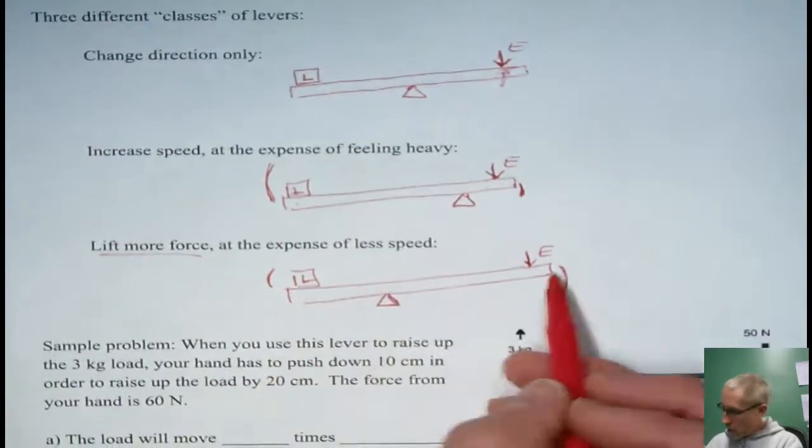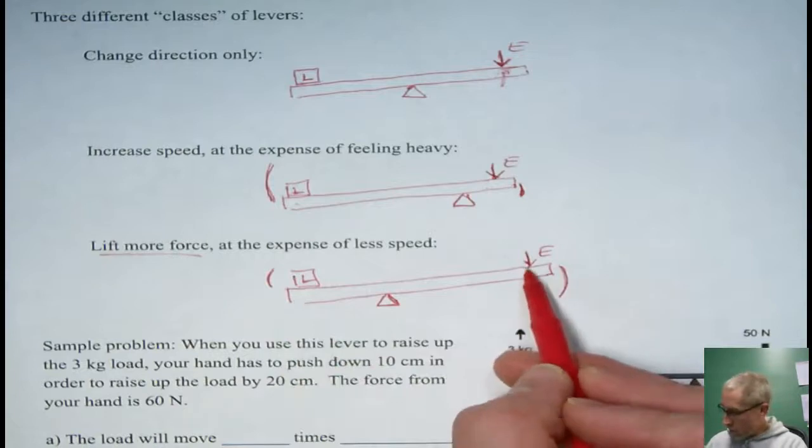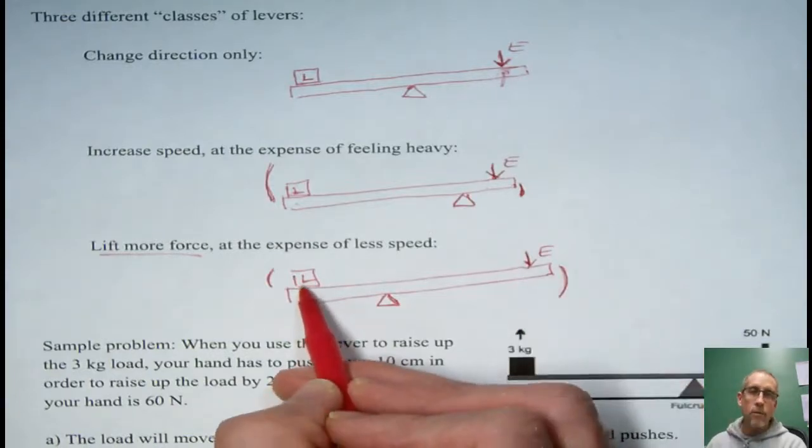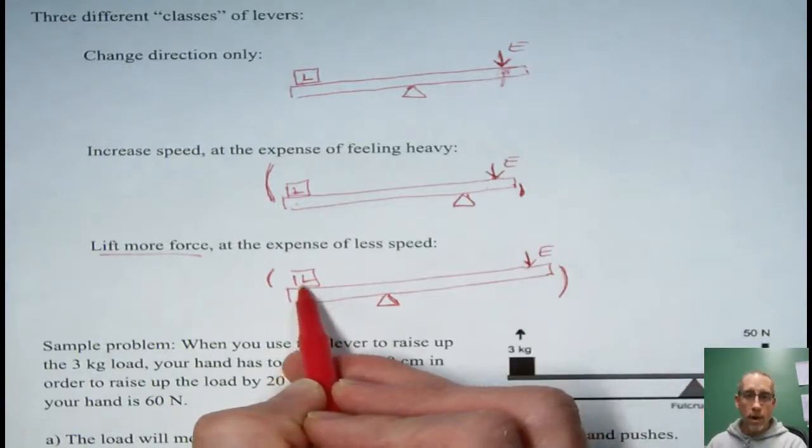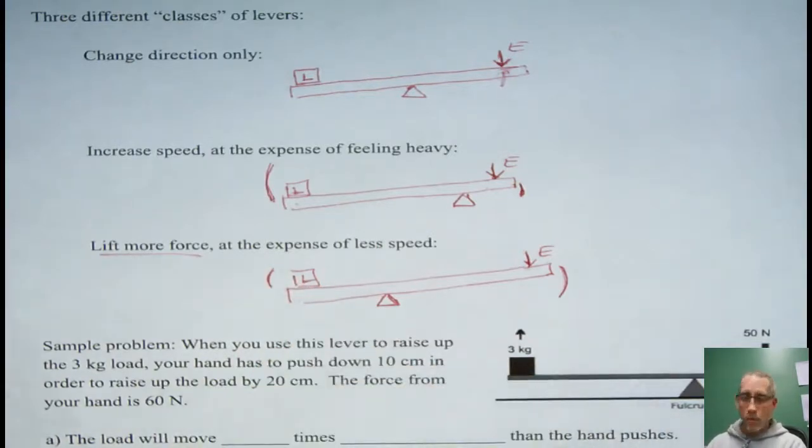So the advantage of this is we can lift a whole lot more force. These make the load feel very light. So our effort force is much less than it would have to be if we were just going to lift the load without the machine. But the drawback is we get less speed for the motion.